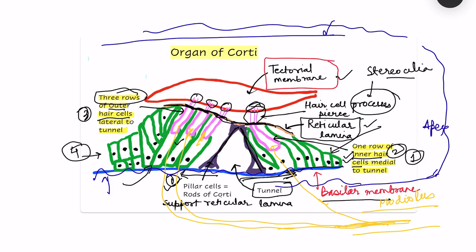With vibration, all the structures present on the basilar membrane also start to vibrate. When the basilar membrane vibrates upward, the cells and hair cells also move up, and the stereocilia — fixed in the reticular lamina and on the tectorial membrane — also move.